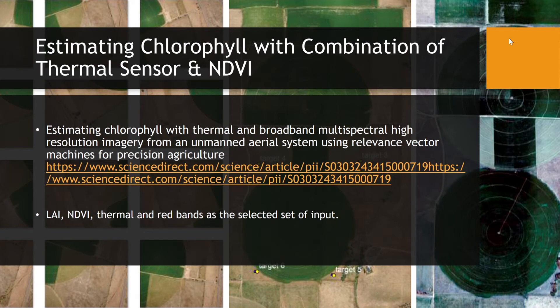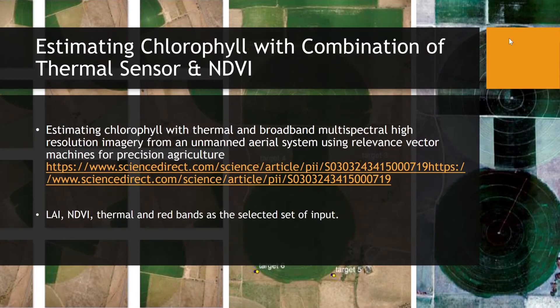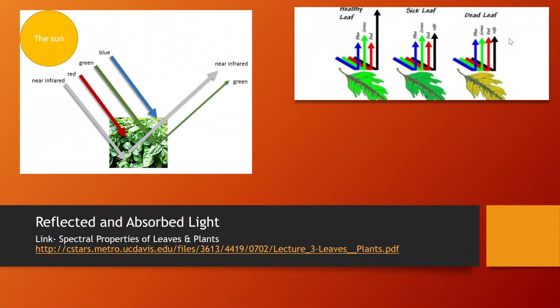This is an example of crop canopy health. Here's an example of estimating chlorophyll with a thermal sensor and a red band as an input for NDVI. I've included some supplemental information that helps understand light reflectance in terms of chlorophyll and plant health.